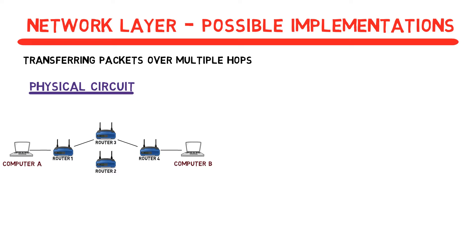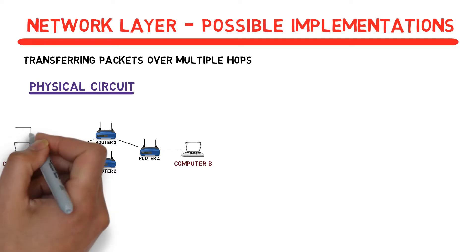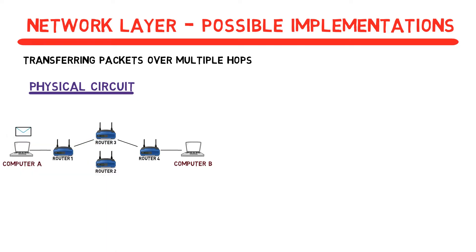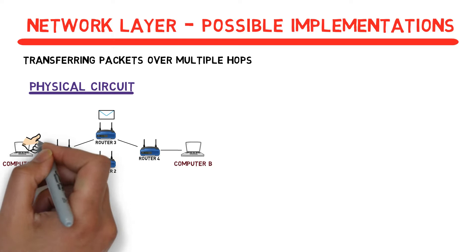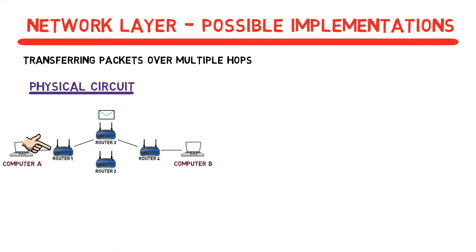Now we have a connection established and computer A can send messages to computer B. Note that in this state the route is known for all packets. When A sends a packet to B, router 1 knows that it should forward this packet to router 3, as the connection is physically established. Any message coming from the port connected to computer A will be forwarded to the port connected to router 3, no question about it.